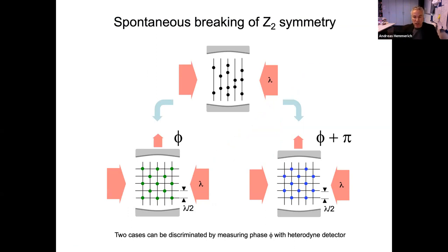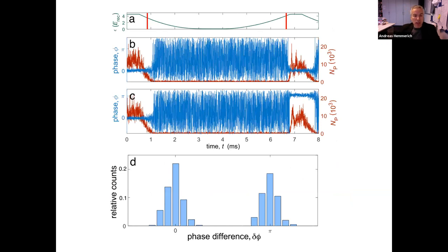And now there's also spontaneous breaking of the Z2 symmetry associated with this phase transition. And this is due to the fact that there are two gratings possible that both make the Bragg condition work for efficient scattering. And these two cases differ by the fact that these lattices, these intracavity matter gratings are shifted with respect to each other by half an optical wavelength. And this can be seen by looking at the light leaking out of the cavity here because there's a different phase between the outcoming photons here and the pump wave for the two cases. And it's easy to understand that the difference in the phase is simply pi. And that can be looked at by a heterodyne detector.